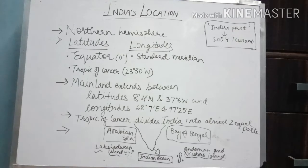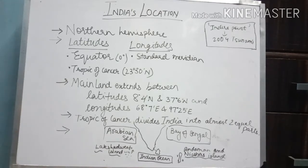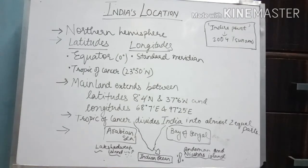India's mainland lies between latitudes 8 degrees 4 minutes North and 37 degrees 6 minutes North, and between longitudes 68 degrees 7 minutes East and 97 degrees 25 minutes East. The Tropic of Cancer, which is 23 degrees 30 minutes North, divides India into almost two equal parts.